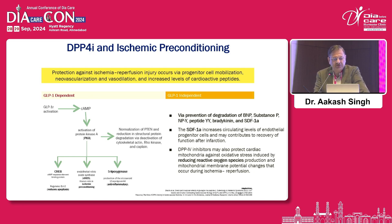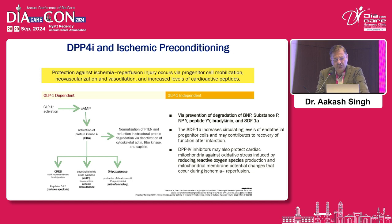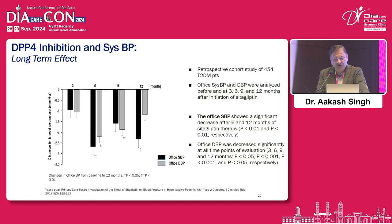There is GLP-1 activation, which leads to activation of cAMP, which leads to activation of protein kinase, and it leads to increase in CREB, endothelial nitric oxide, and 5-lipoxygenase. All of these are beneficial — they decrease apoptosis, they decrease myocardial infarct size, and they preserve myocardial function. This is done by prevention of degradation of BNP, substance P, NPY, peptide YY, bradykinin, and SDF-1-alpha. Basically, studies show improvement in cardiovascular function.